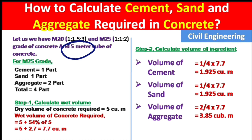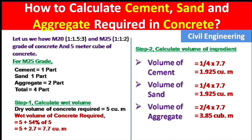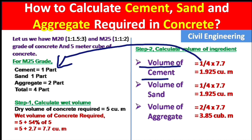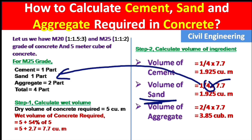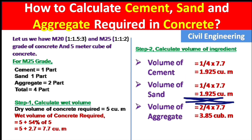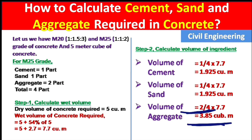Step 1: we again have 5 cubic meters of concrete, so adding 54% of 5 we again get 7.7 cubic meters total wet volume. Step 2: volume of cement = 1 divided by 4 multiplied by 7.7 = 1.925 cubic meters. Volume of sand = 1 divided by 4 multiplied by 7.7 = 1.925 cubic meters. Volume of aggregate = 2 divided by 4 multiplied by 7.7 = 3.85 cubic meters.